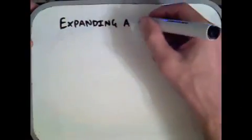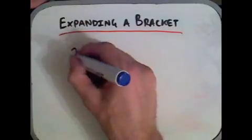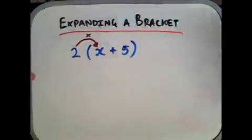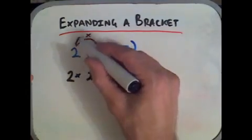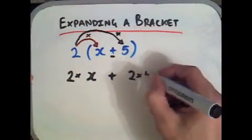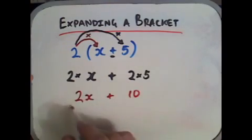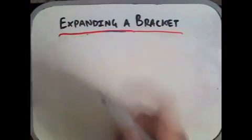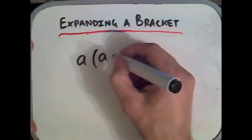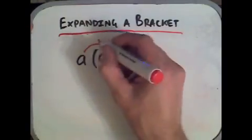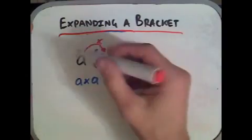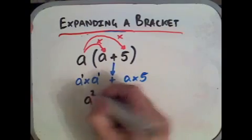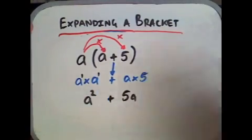Now let's look at expanding a bracket. We have 2 multiplied by the bracket x plus 5. We multiply 2 by each term inside: 2 times x gives 2x, plus 2 times 5 gives 10. So the answer is 2x plus 10. Another example: a multiplied by the bracket a plus 5. a times a gives a squared, and a times 5 gives 5a. So the answer is a squared plus 5a.